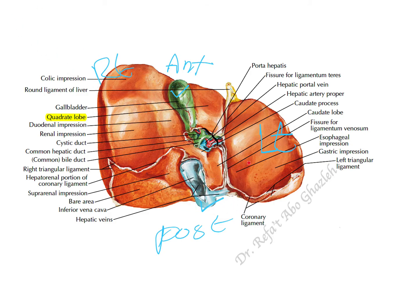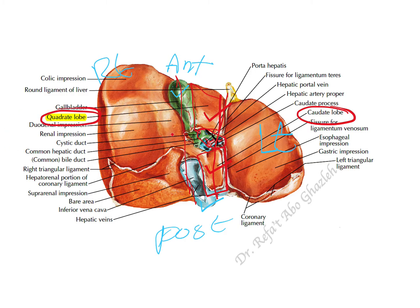The porta hepatis is located between two lobes: the quadrate lobe anteriorly and the caudate lobe posteriorly. That's it for this video — thanks for watching and I hope you found value in it.